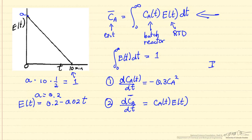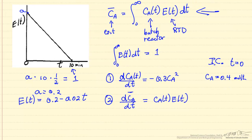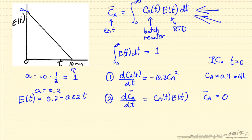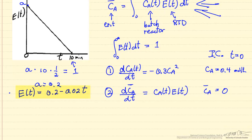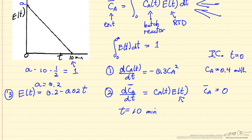We need initial conditions for these differential equations. Ca is given in the problem statement as initially 0.4 moles per liter at t = 0, and Ca average equals 0 at t = 0 — substituting and integrating only to 0 gives Ca average of 0. We integrate to the final time of 10 minutes, because E(t) equals 0 at times longer than 10 minutes.